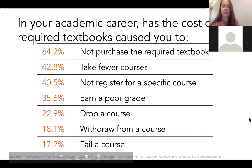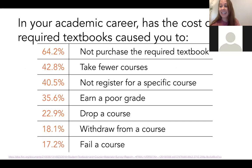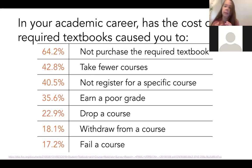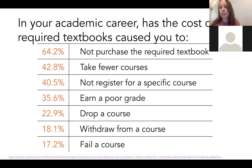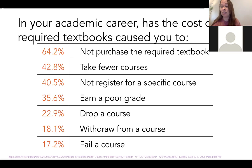A survey done in Florida surveyed over 20,000 university undergraduate students and asked if the cost of required textbooks had ever caused them certain difficulties. 64.2% reported at some point in their academic career not having purchased the required textbook. Looking at just one semester, about one-third of students do not buy at least one assigned textbook. Students report taking fewer courses — leading to a longer time to complete their degree — not registering for specific courses, earning a poor grade, dropping a course, withdrawing, or failing. There is a direct relationship between access to the course textbook and student success.